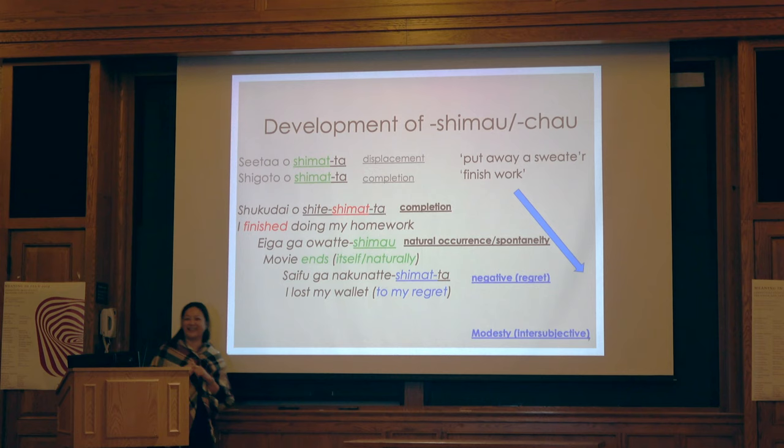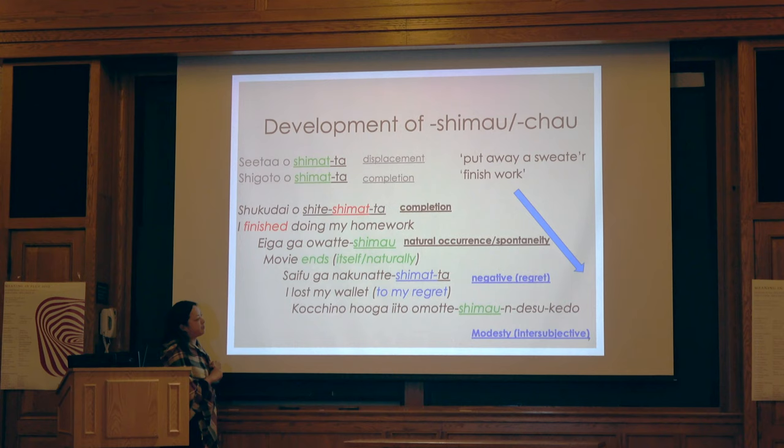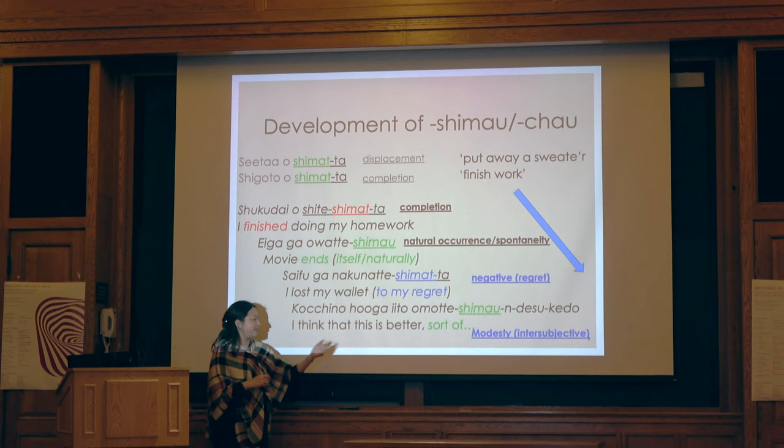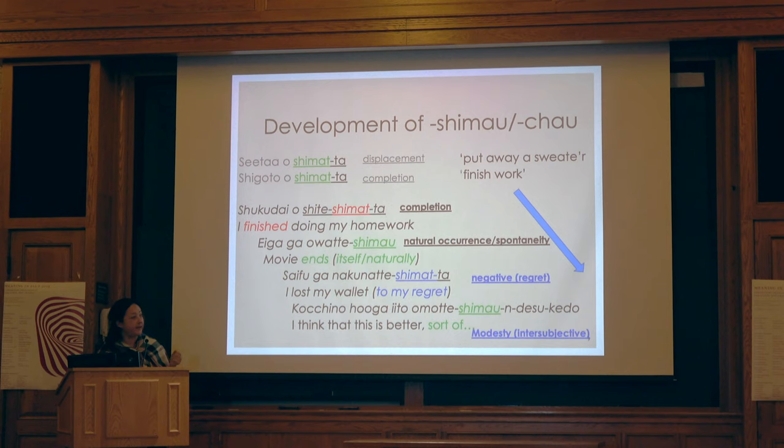And then 'kochira no hou ga ii to omotte shimau desu kedo' — 'I can't help but think that this is better' — that's the best translation I can come up with. There is also variation: shimau versus chao. Chao is a contracted form that eventually emerged along the way.